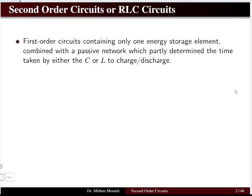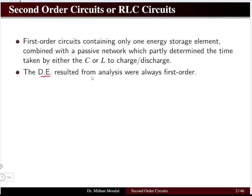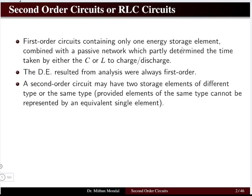Second order circuits are basically RLC circuits. A first order circuit contains only one energy storage element — either an inductor or a capacitor — combined with a passive network of resistances. This passive network partly determines the time taken by the capacitor or inductor to charge or discharge. The time constant tau governs this, and five time constants is when the circuit is entirely charged or discharged. The differential equation resulting from a first order circuit (RL or RC combination) is only first order.